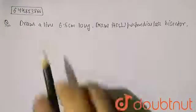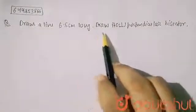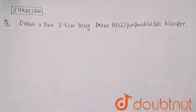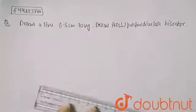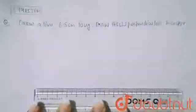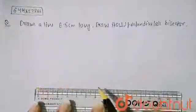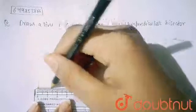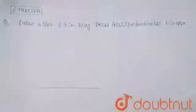It is given that draw a line 6.5 centimeter, draw its perpendicular bisector. Okay, so here I am drawing the line 6.5 centimeter. In the scale you can see that from here to here it is 6.5, so this is my 6.5 centimeter line.